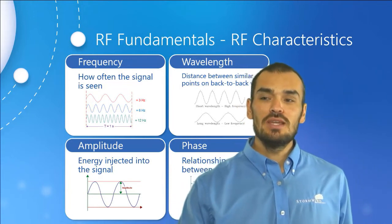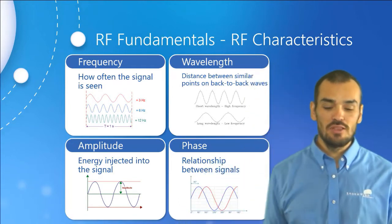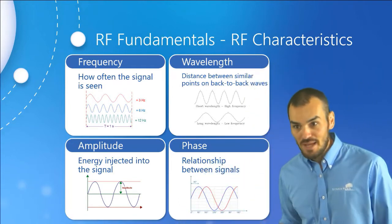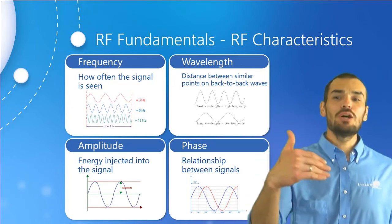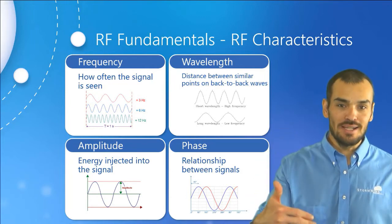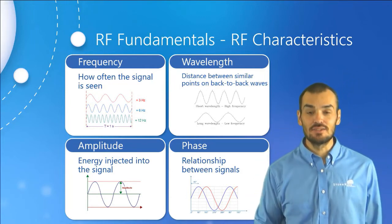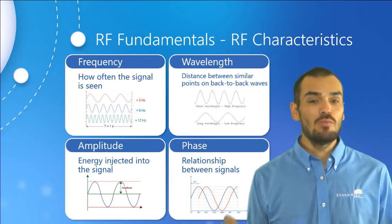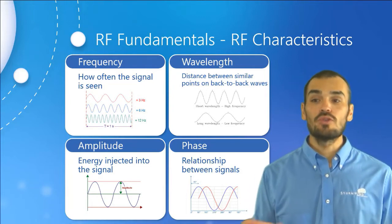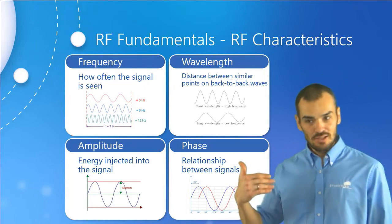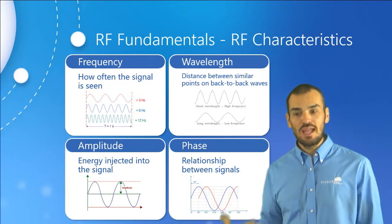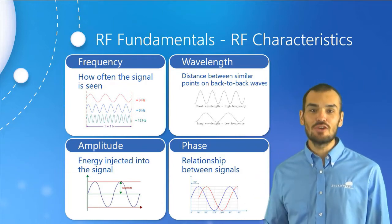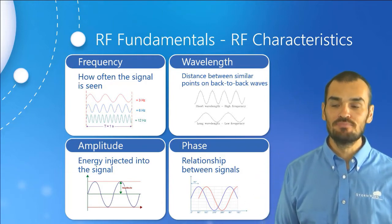Amplitude is the vertical distance between the crests of the wave — basically how much energy is injected into that signal. Different amplitudes can exist for the same wavelength or frequency. The more energy that goes into the signal, the higher the amplitude is going to be.